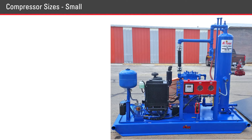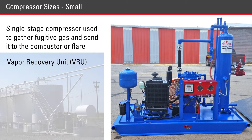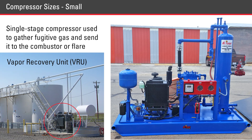A compressor may be as small as this one shown here. This single stage model is used to gather fugitive gas and send it to the combustor or flare. It is known as a vapor recovery unit, or VRU.